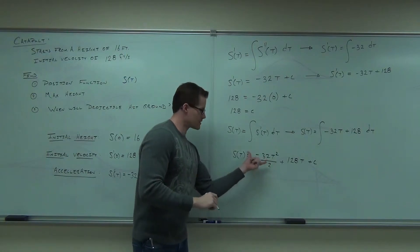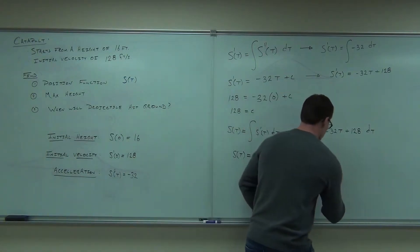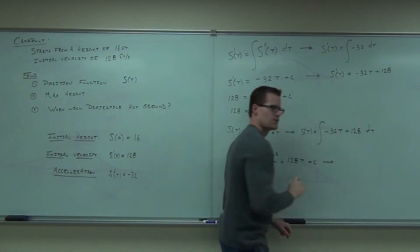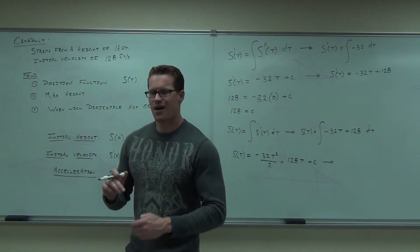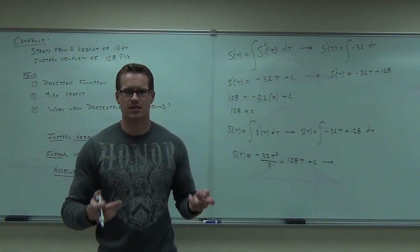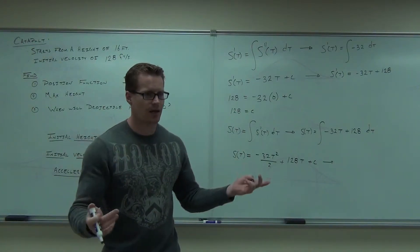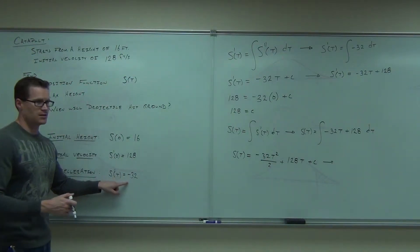Now, of course, you guys are right. This is going to be negative 16t squared. In fact, if you've ever seen position functions for projectiles, they always have that negative 16t squared in front of it. Why? Gravity. That's why.